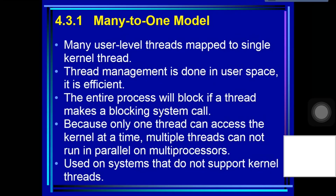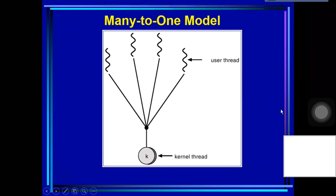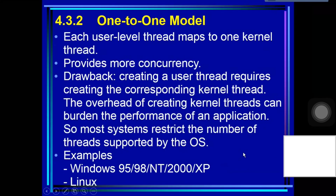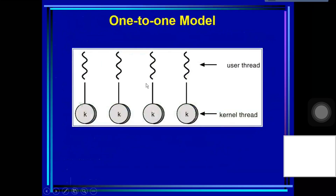Green Threads, a thread library available for Solaris systems and adopted in early versions of Java, used the many-to-one model. However, very few systems continue to use the model because of its inability to take advantage of multiple processing cores. One-to-one model: the one-to-one model maps each user thread to a kernel thread.